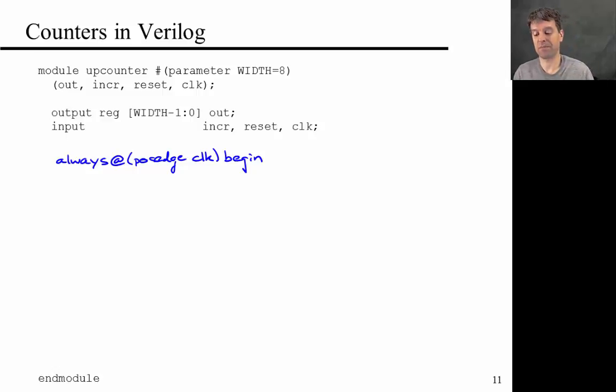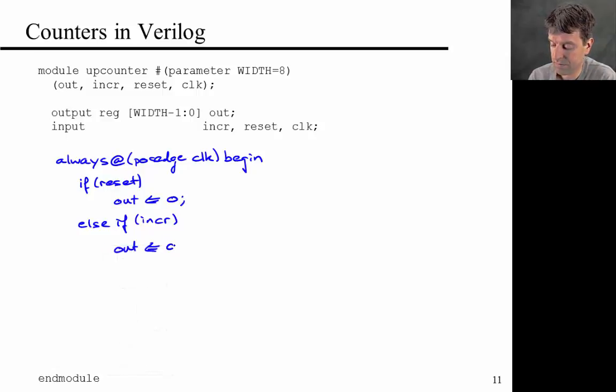I'm just going to go through the different cases here. I want to build an advanced counter where I can have a reset. So, I say if reset, then I'm setting the value of out to 0. Else if increment is true, then I'm setting the value of out to out plus 1.